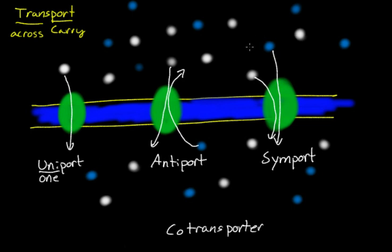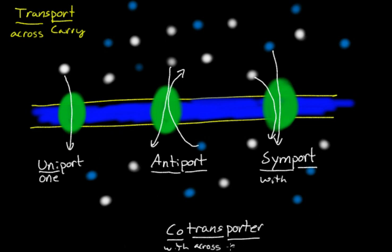While the symporter carries them both across together. Anti means opposite and port means carry. Sim means with, and port again means carry. Co also means with, trans means across, and port means carry. These are the different types of transporters — very basic. The only thing I would add is that symport and antiport transporters are also known as secondary active transporters. I'll explain that in the next video.